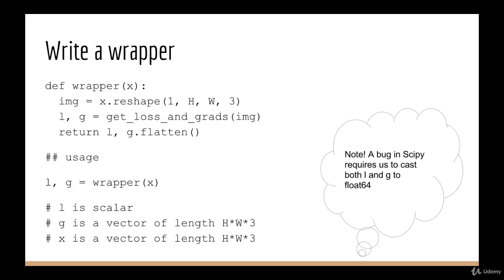One final note is that in the code, we're going to see that we cast the return values to float64. This is a weird bug in SciPy where it just doesn't work if you don't do this. So we have to cast the outputs to float64 in order for everything to work properly.